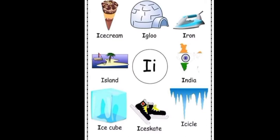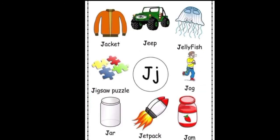I: ice cream, igloo, iron, island, India, ice cube, ice skate, icicle. J: jacket, jeep, jellyfish, jigsaw puzzle.